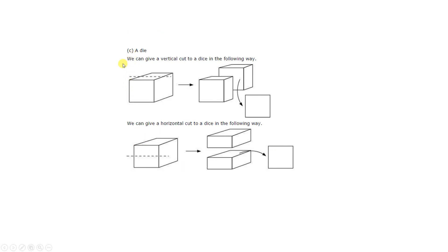Next, a die. A die is a solid shape which is nothing but an example of a cube. When we give a vertical cut to a die, it divides in two parts and the cross section we can see is nothing but a square. And when we do a horizontal cut of a die and see the cross section, it is also a square, and these two squares are equal.